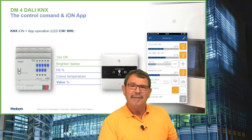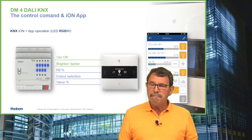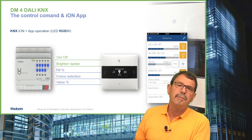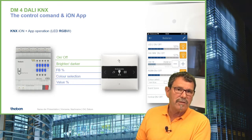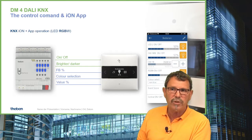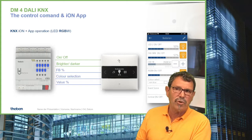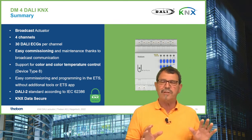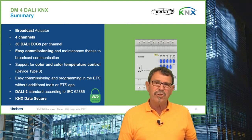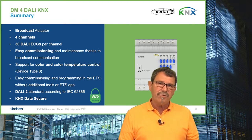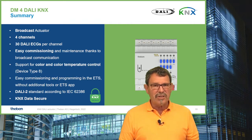To enable app control, you just need one additional group address: a percentage value communication object from the EON linked to the percentage value communication object from the dimmer. That's the only extra step. Then you can control RGB color, color temperature, or whatever you like directly from your mobile or tablet. All in all: four channels, each supporting 30 switch gears, with data type 8 communication.